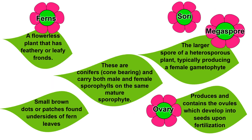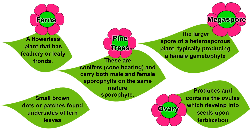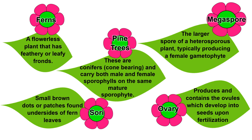Then, pine trees. Okay, so pine trees: these are conifers or cone-bearing and carry both male and female sporophylls on the same mature sporophyte. And our last flower goes here: small brown dots or patches found on the undersides of fern leaves.